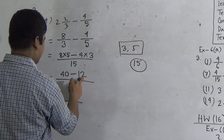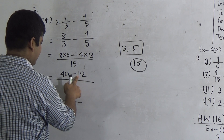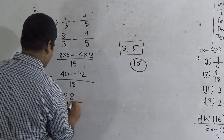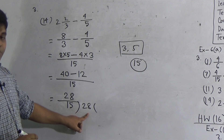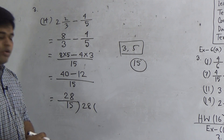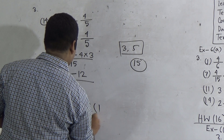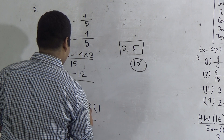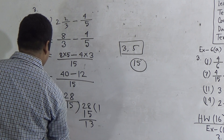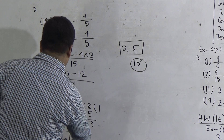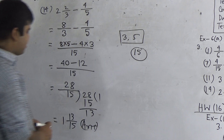Now we do subtraction. From 40 minus 12: units digit — 2 from 10 gives 8, carry 1; tens digit — 1 plus 1 is 2, 2 from 4 is 2. So we get 28/15. Now we divide 28 by 15. In 28, 15 goes 1 time — 15 ones are 15. We subtract and get 13. So the mixed fraction is 1 and 13/15. This is the answer of this question. I hope you have understood.